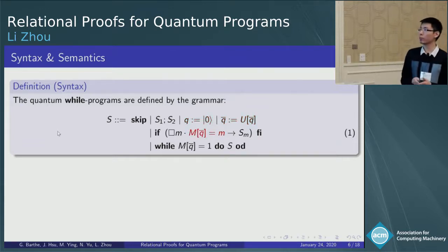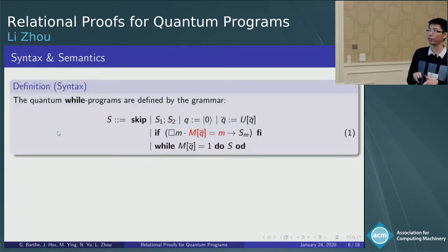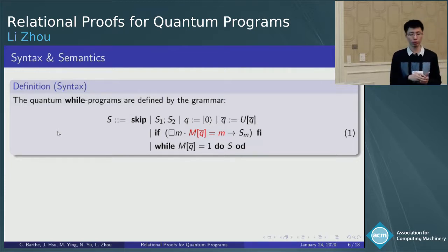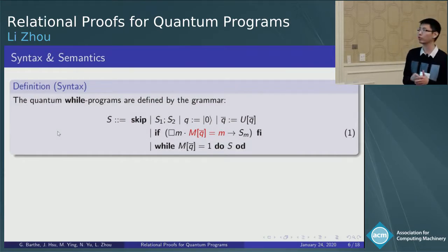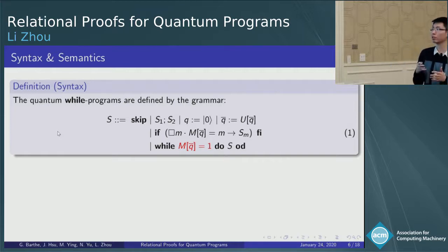In if statement, the guard is a quantum measurement. In detail, we first apply the quantum measurement, and then execute the sub-program Sn, according to the quantum outcome of the quantum measurement n. And similar for the while statement, if the outcome is zero, then we terminate, and if it's one, we execute the sub-program S, and then the while again.